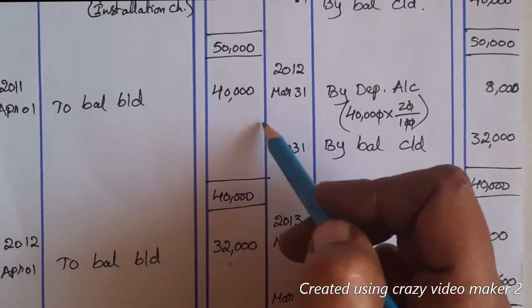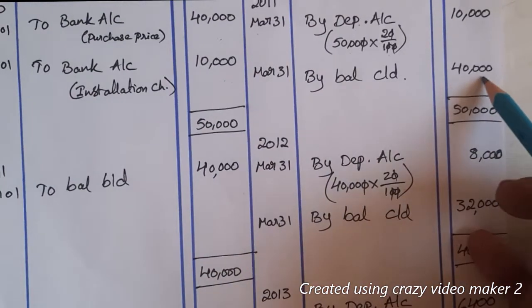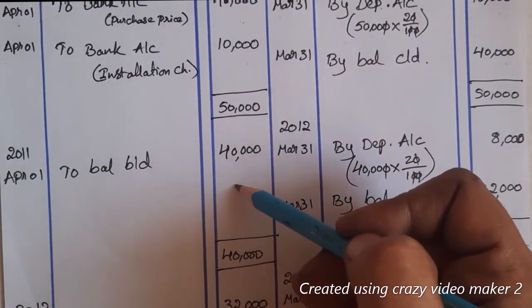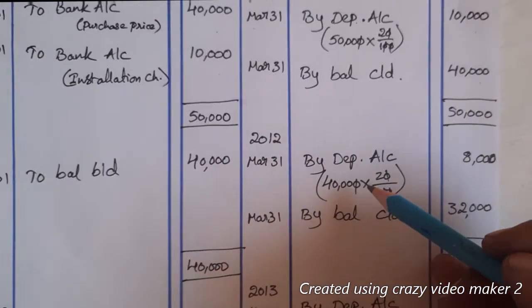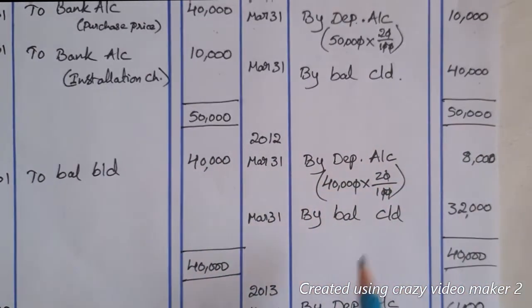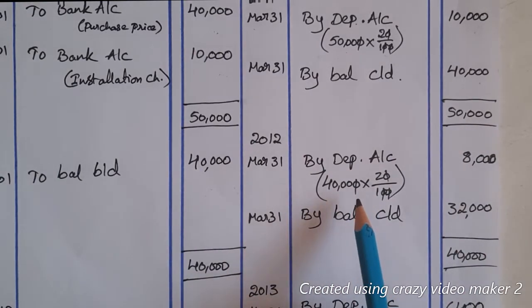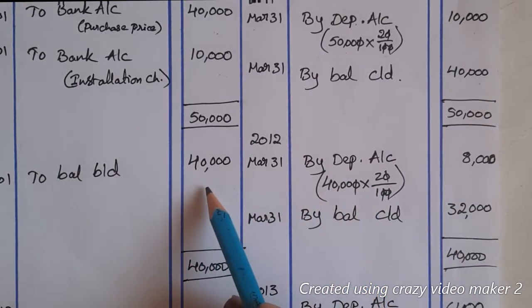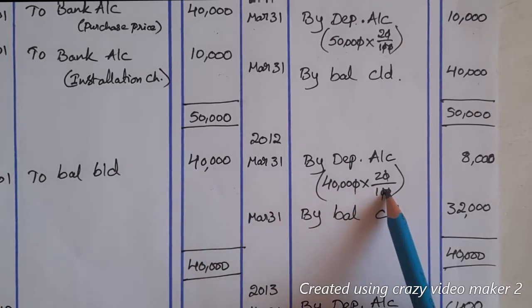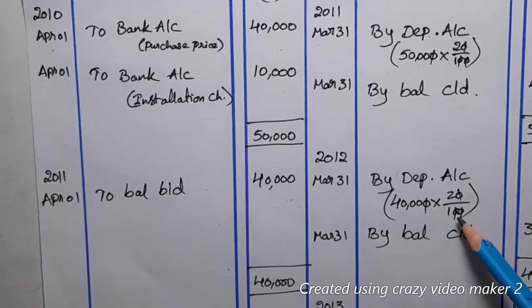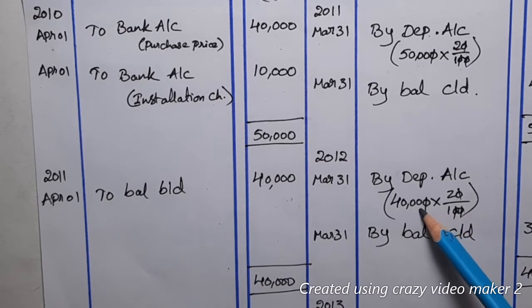The diminishing balance of ₹40,000 is brought down to the next year. In Year 2, we apply fresh depreciation on the brought-down balance of ₹40,000. 20% of ₹40,000 equals ₹8,000 depreciation for the second year. After totaling and balancing, the closing balance is ₹32,000.